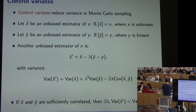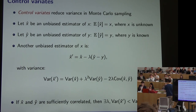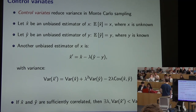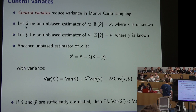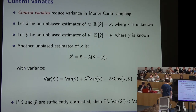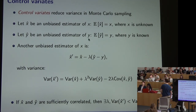The most commonly used variance reduction technique in policy gradient methods is called a baseline — a special case of a general technique called control variates. Suppose we have a random variable x and an unbiased estimator x-hat of its expectation. Now suppose there's another random variable y-hat, which is an unbiased estimator of y, and the expected value of y is known to us.